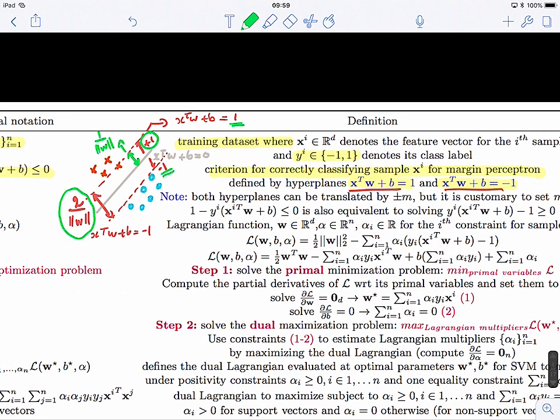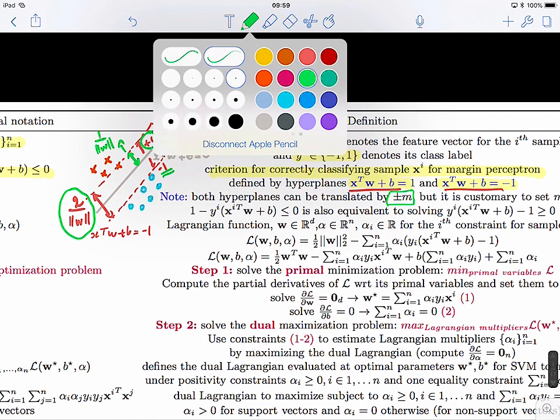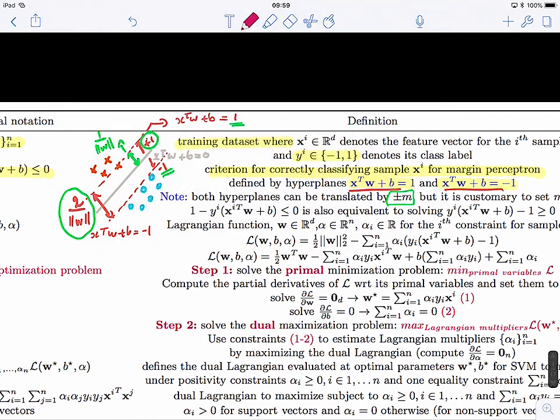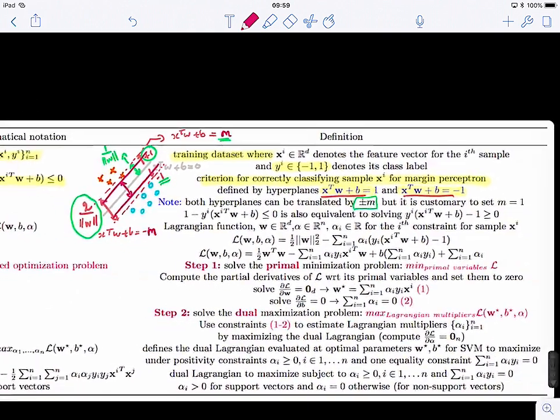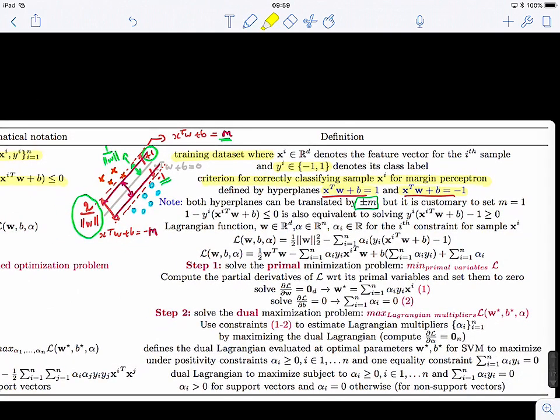Now there is a more general case where we can translate the hyperplanes by plus minus a value or a scalar M. So we can just move them a little bit maybe down or up. So this is the general case. This will be equals to M and minus M.